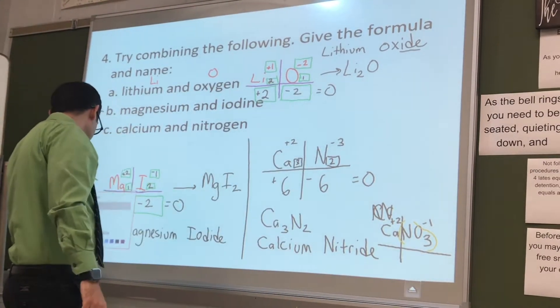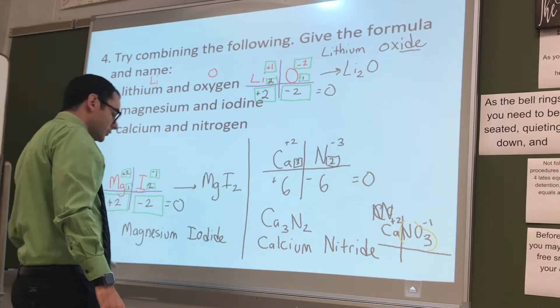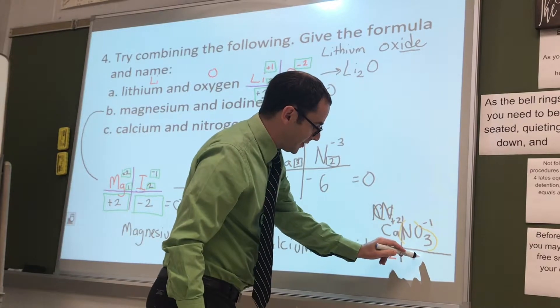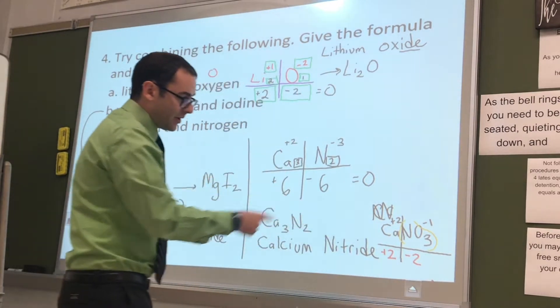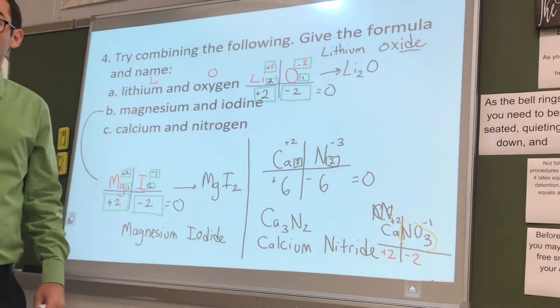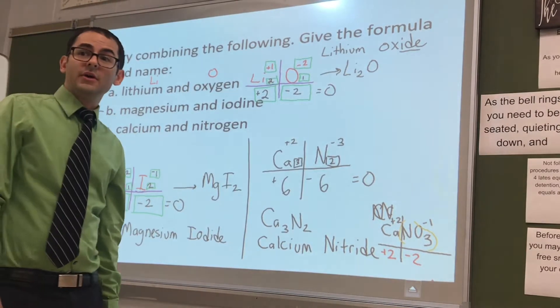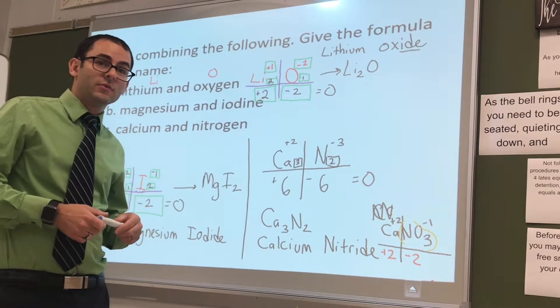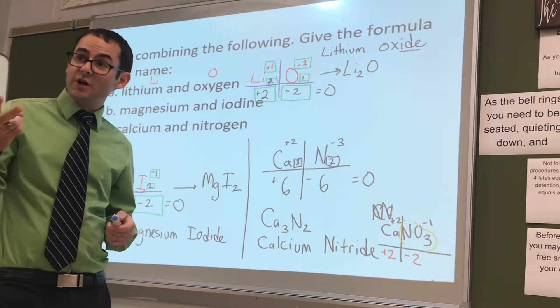So, this is very similar where we need to figure out a plus two charge. Because calcium is plus two. And then we need to make this minus two. How are we going to make that one minus two? How are we going to make nitrate minus two? We need one more of it, right? We need two nitrates.